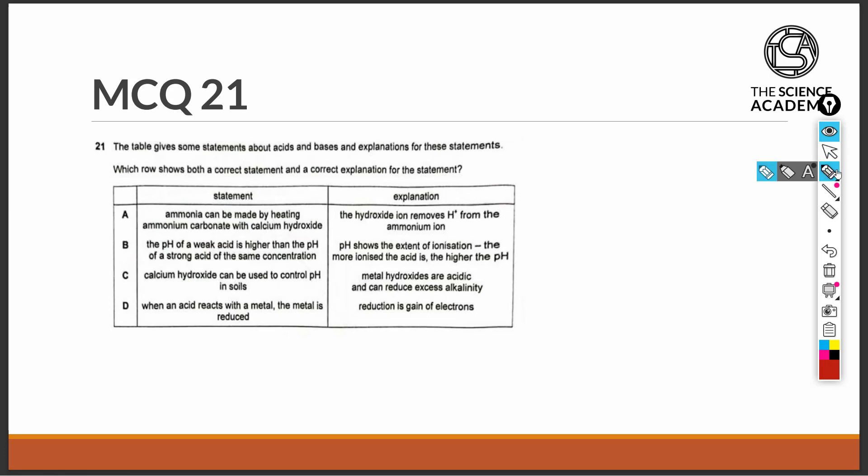Let's take a look at statement A. Ammonia can be made by heating ammonium carbonate with calcium hydroxide. This statement is true because calcium hydroxide, which is a metal hydroxide, is a base. And we know that bases can react with ammonium salts to give ammonia gas. In this case, the ammonium salt is ammonium carbonate.